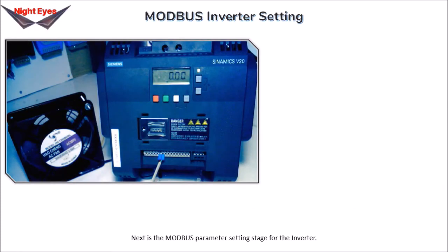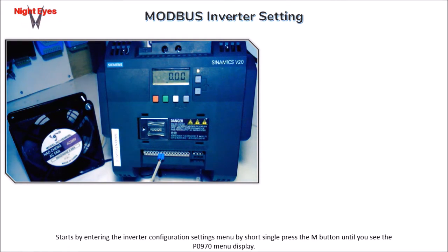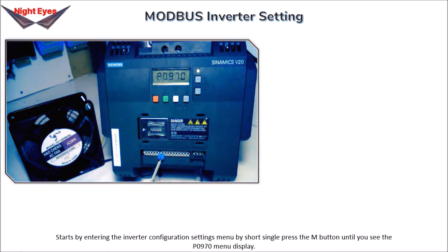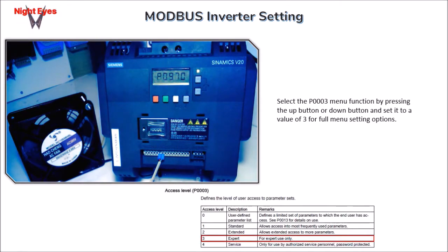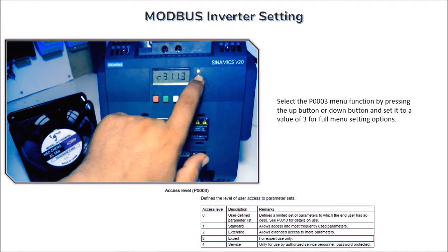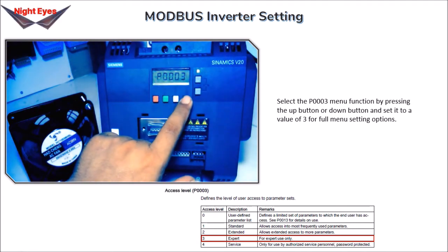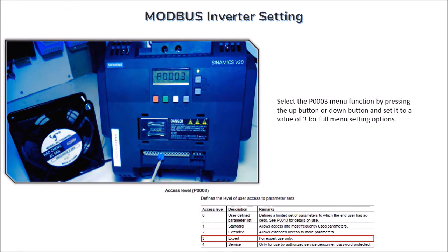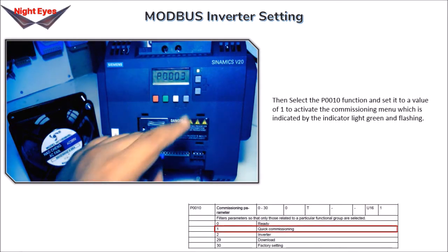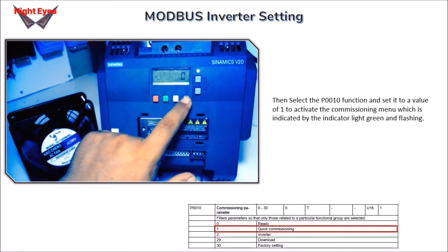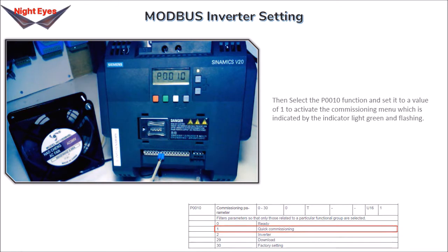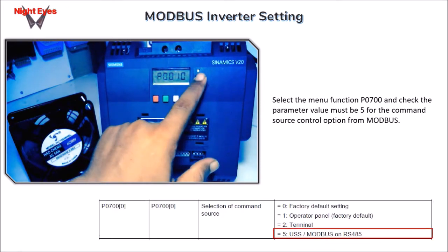Next is the Modbus parameter setting stage for the inverter. Enter the inverter configuration settings menu by short pressing the M button until you see the P0970 menu. Select P0003 and set it to 3 for full menu setting options. Then select P0010 and set it to 1 to activate the commissioning menu, indicated by a green flashing indicator light. Select P0700 and verify the parameter value is 5, for command source control from Modbus.